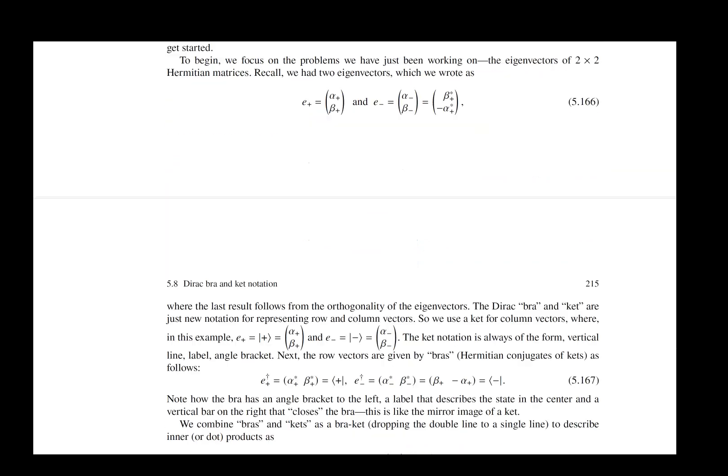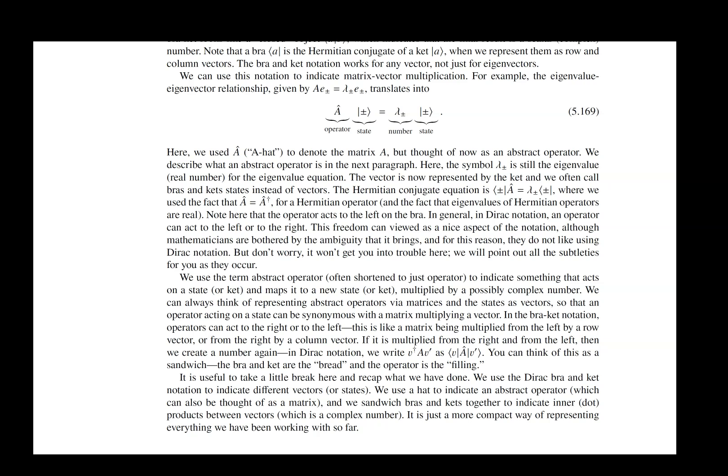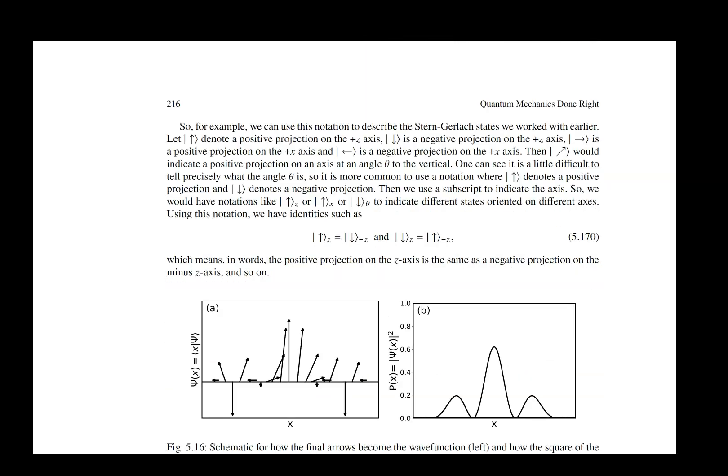And then we finally get to the Dirac Bra and Ket notation. With the Dirac Bra and Ket notation, it's really just a notation. There's nothing more than that. The thing that sits inside it is just the label to tell you what the state is or what the vector is that you're working with. That's really all that there is to it.